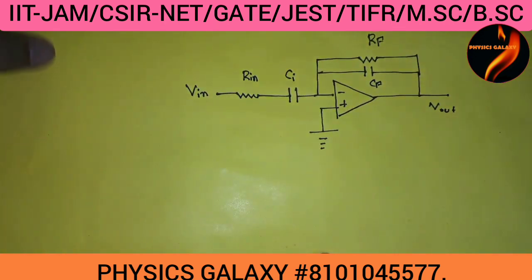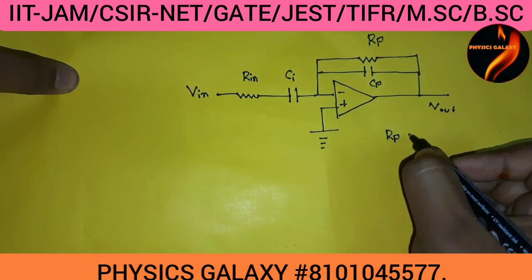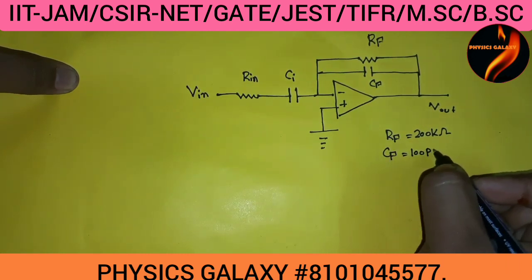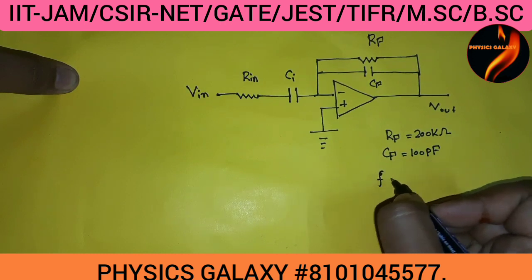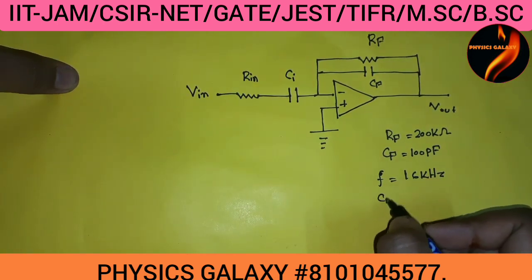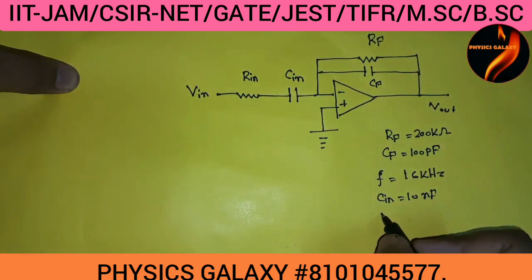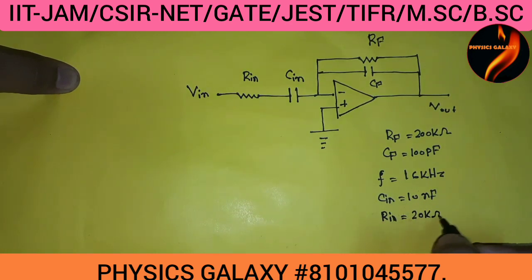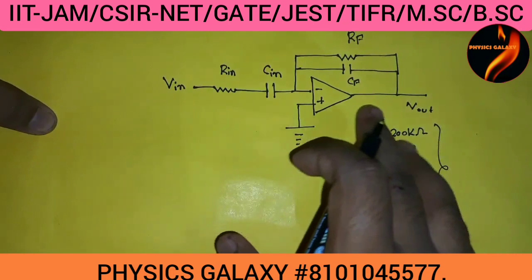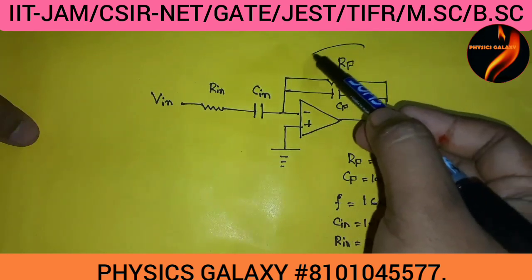This is the circuit diagram given in this problem. The data given here is: resistance RF is 200 kilo-ohm, CF is 100 picofarad, frequency is 16 kilohertz, Cin is 10 nanofarad, and Rin is equal to 20 kilo-ohm. These are the data given in this problem. We have to find out the voltage gain of the circuit.